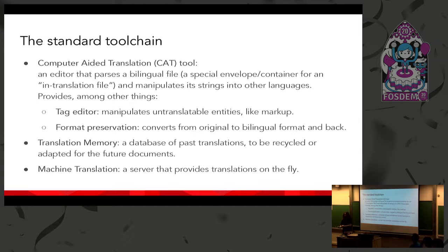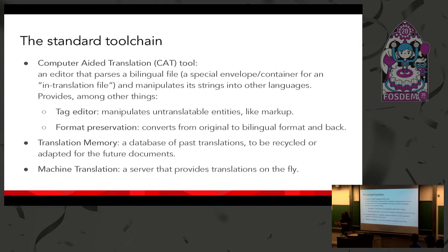You can manipulate these strings into other languages. Among other capabilities, a CAT tool must provide tag editing — so you can manipulate files by handling untranslatable entities like markup. A lot of the content in a well-formatted file is formatting which doesn't need to be translated; you must preserve it, otherwise you'll break the markup. Number two is format preservation: you convert from the original file to a bilingual system, translate all the strings, then pack the strings back into the original file format, preserving the formatting.